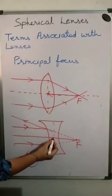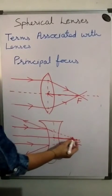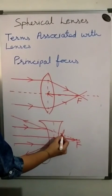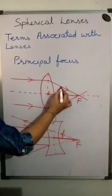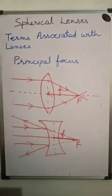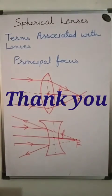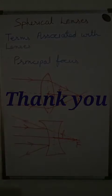The distance between the focus and the optical center of a lens is known as the focal length. This distance on either side is called the focal length, denoted by small f. Thank you everyone.